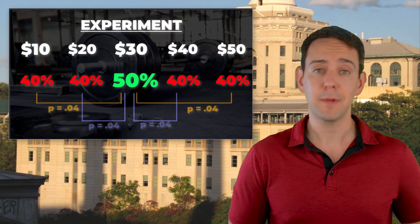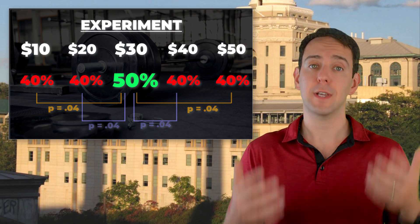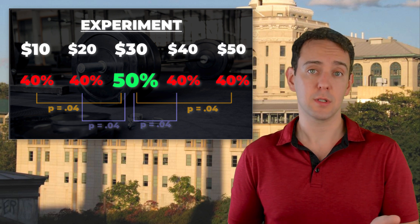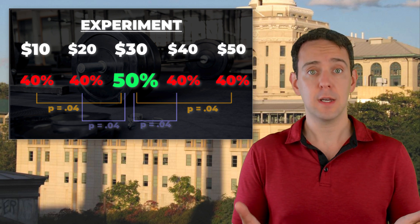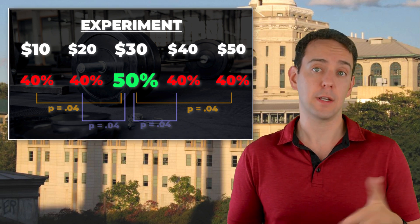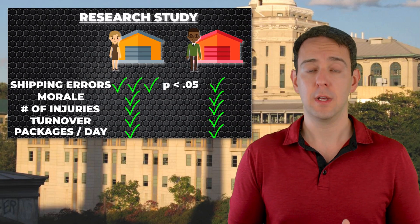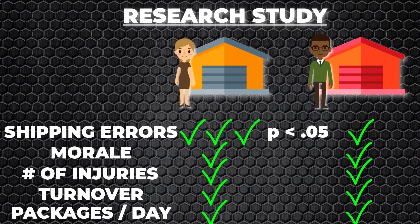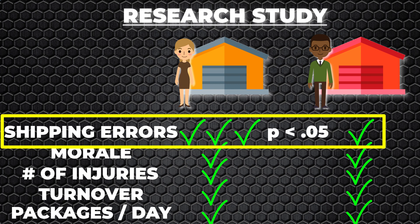Now, if you watched the other video on p-hacking, this should seem very familiar. There, we talked about how testing a prediction across multiple conditions without explicitly specifying which one is the key one to test greatly increases how likely an observed result is to be a false positive. This is a very similar situation. The consultants did not say they were only interested in shipping error rates. Rather, they measured a bunch of things, and then — after seeing that one of them exhibited a difference — decided that was the one that was key to report.